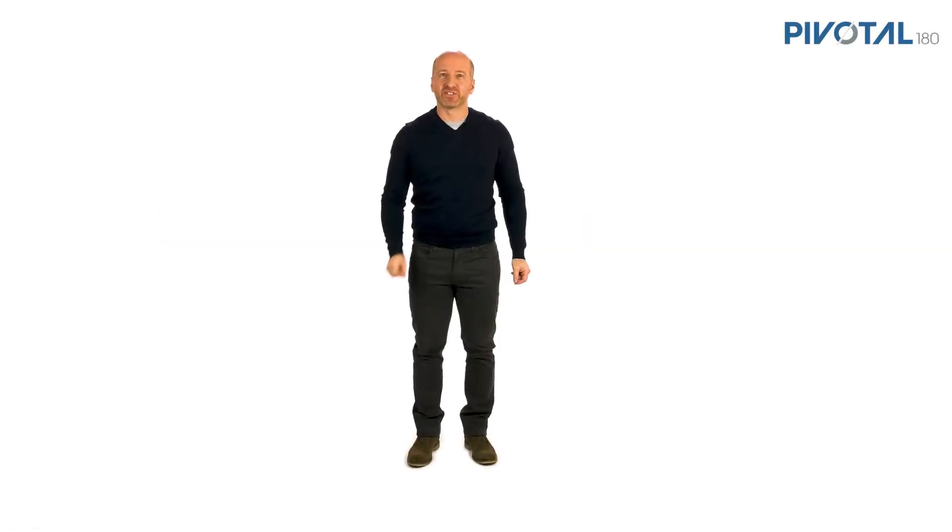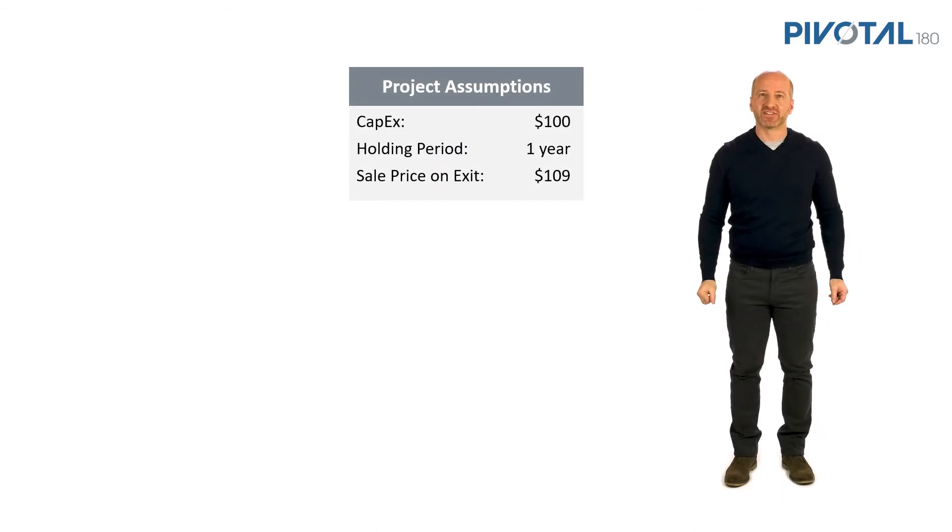It costs $100 to build this project. That is the capex that's going to be spent and the project will last exactly one year. At the end of the year, we can sell that project and all of the benefit it has generated for $109. So there's a $9 baked in profit.